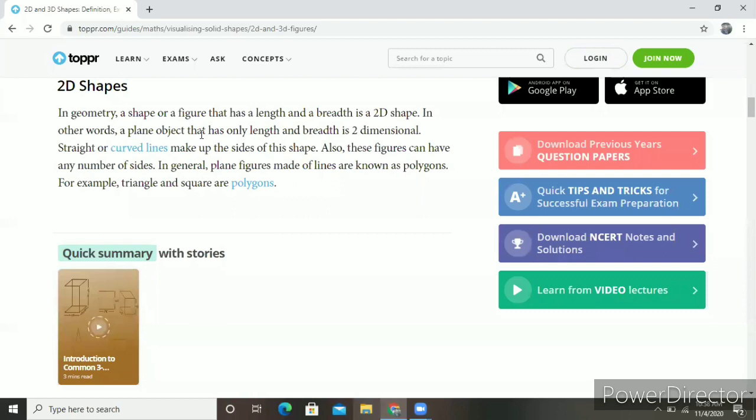In detail, we will study 2D shapes. A shape or figure that has length and breadth is a 2D shape. In other words, a plane object that has only length and breadth is two-dimensional. Straight or curved lines make up the sides of this shape.